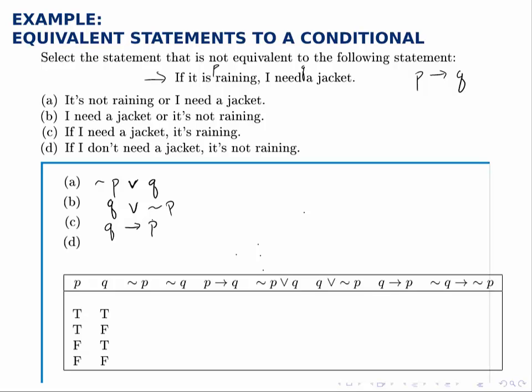Part D, if I don't need a jacket, so if not Q, then it's not raining, which is not P.